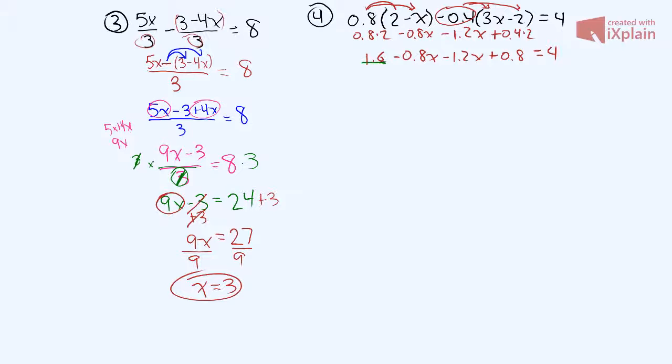Okay, so now what we need to do is find like terms. We have this positive 1.6 and this positive 0.8, and then we have this minus 0.8x and this minus 1.2x. So if we take 1.6 and we add it to 0.8, we go 1.6 plus 0.8, we're going to get 2.4, and it's positive 2.4.